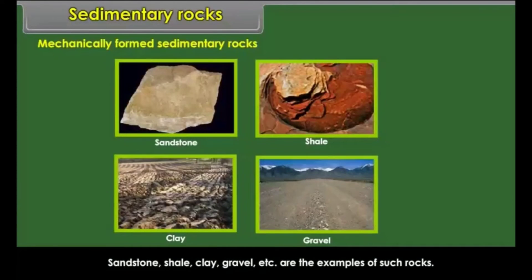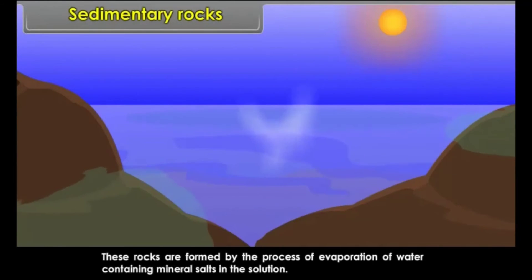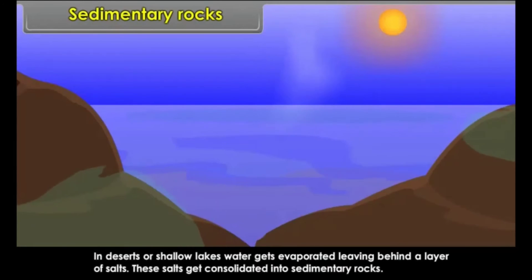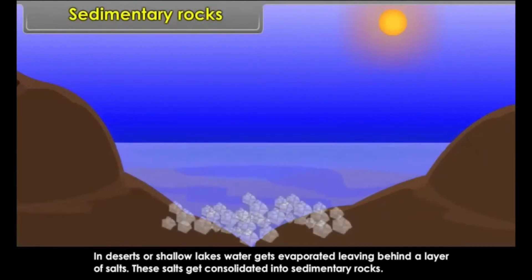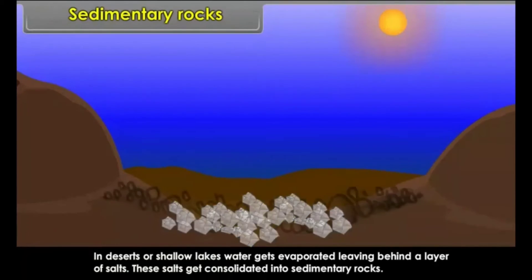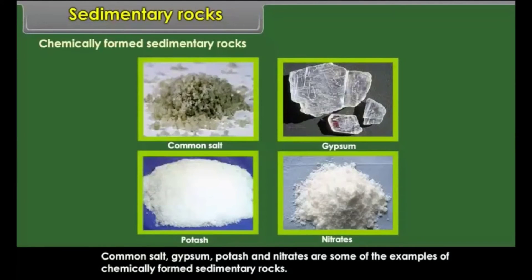Sandstone, shale, clay, and gravel are examples of mechanically formed sedimentary rocks. Chemically formed sedimentary rocks are formed by the process of evaporation of water containing mineral salts in solution. In deserts or shallow lakes, water gets evaporated leaving behind a layer of salts, which consolidate into sedimentary rocks. Common salt, gypsum, and nitrates are some examples of chemically formed sedimentary rocks.